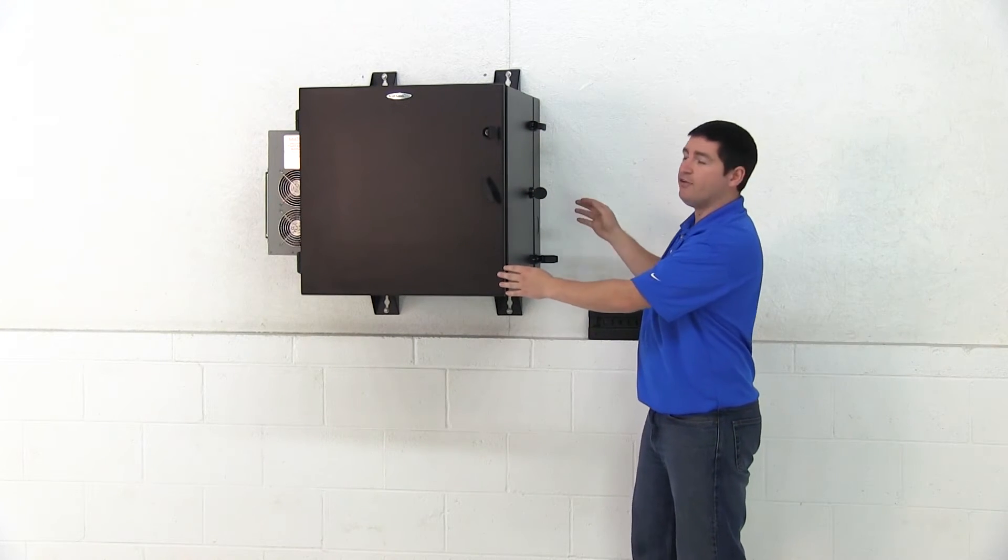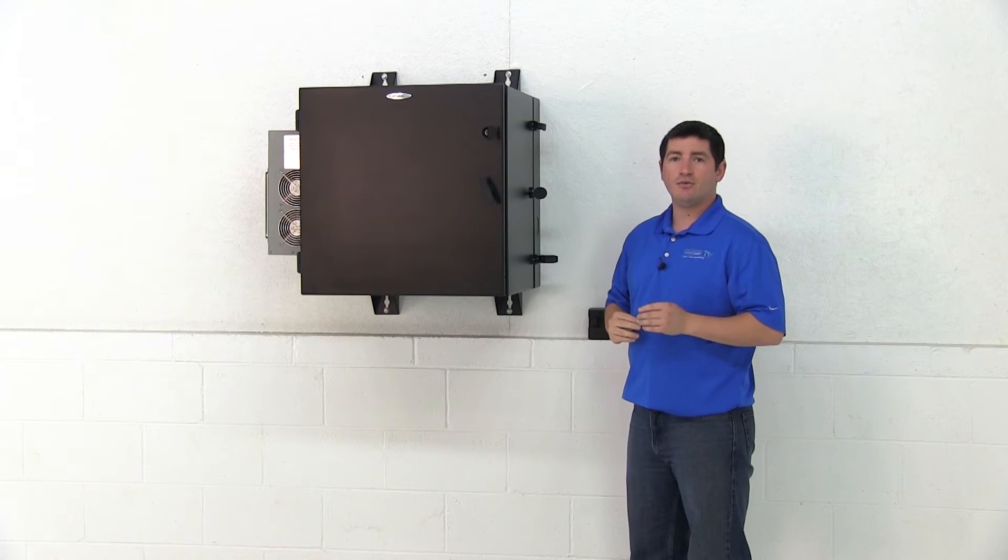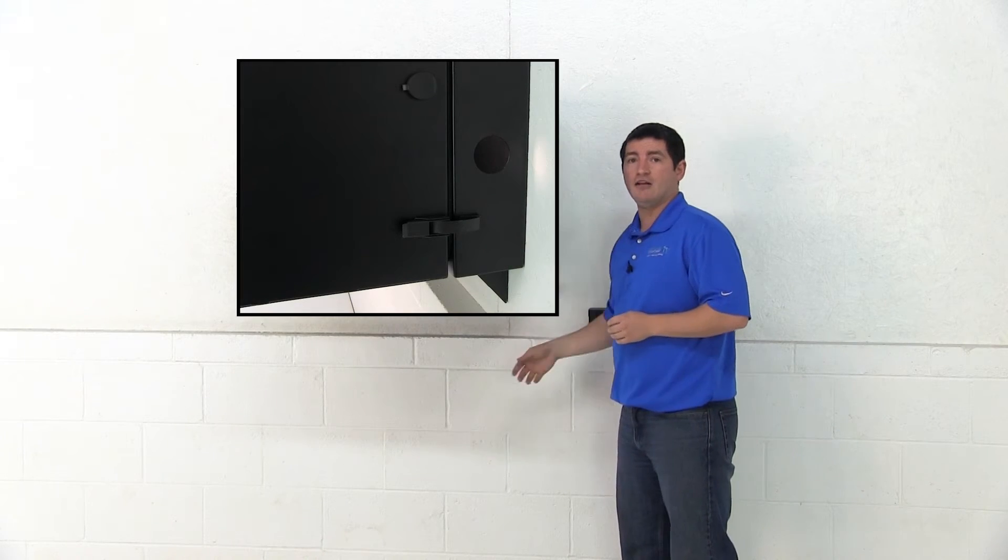The rear panel of the wall mount features 2-inch conduit knockouts on the top, sides and bottom.